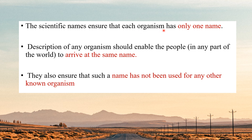Scientific names ensure that each organism has only one name. One name should not denote two organisms — that would defeat the whole purpose of nomenclature. We want uniqueness: this name means this organism, no other. The description of any organism should enable people anywhere in the world to arrive at the same name. This also ensures that such a name has not been used for any other known organism before.